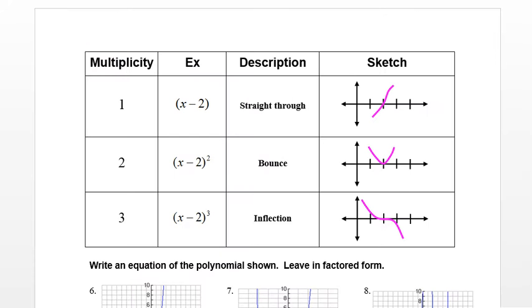Now, we have learned that the graph behaves differently depending on the multiplicity of the factor. Is it a single, a double, or a triple? If it's just a single factor, the graph just goes straight through that particular zero. But if it's a double, the graph bounces off that zero like this.